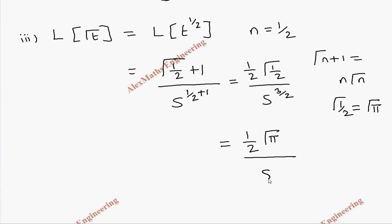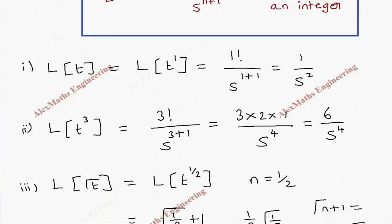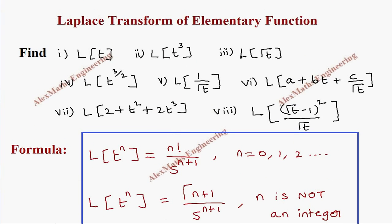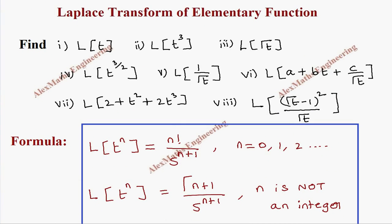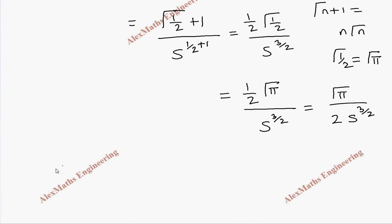Since gamma of half equals square root of pi, the numerator becomes half times root pi, divided by s to the power 3 by 2. Rearranging, we get root pi by 2 times s to the power 3 by 2. So the final answer is root pi divided by 2 s to the power 3 by 2.